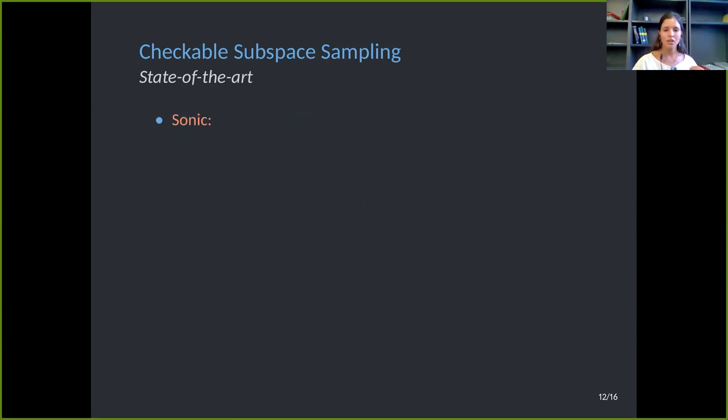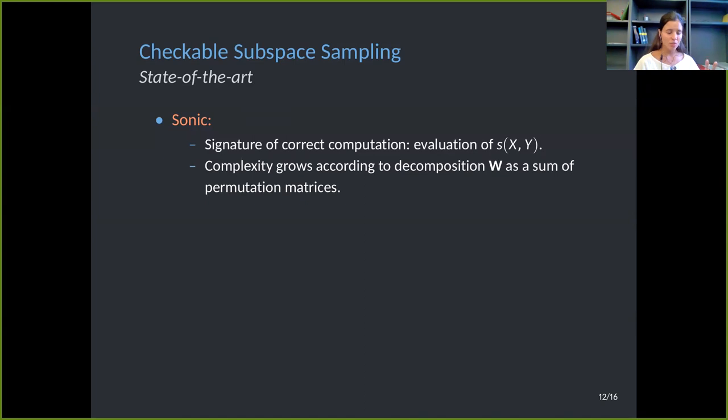That's the core of this work. So in Sonic, it's implicit in the signature of correct computation. The partial evaluation of this bivariate polynomial S is indeed a sampling in the rows of the matrix that describes the circuit. Then they present two constructions. In the succinct construction, they assume that W can be written as a sum of permutation matrices, which is a viable assumption. And the complexity depends on how many permutation matrices we need to compute W. And then they present an amortized checkable subspace sampling that is unrestricted, makes no assumptions on the structure of W, and is super efficient.